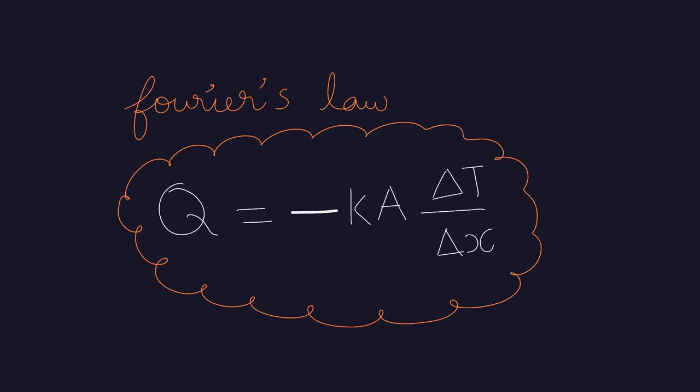This of course can also be written in differential form. Q is equal to minus K A dT by dX.